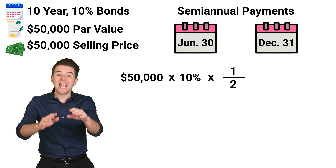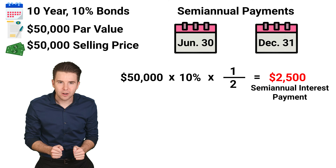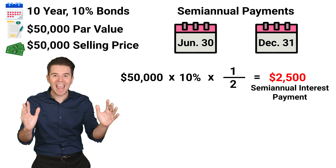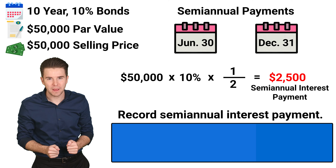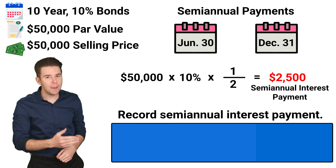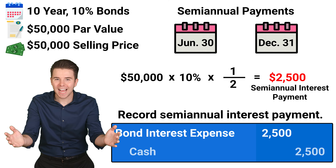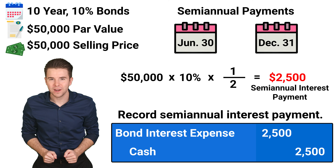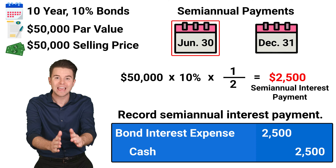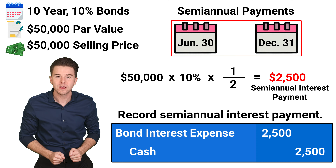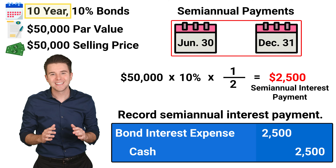This results in $2,500 interest payments twice per year for the next 10 years. To record the entry for the semi-annual interest payment, we debit bond interest expense for $2,500 and credit cash for $2,500. We record this entry for each interest payment on June 30th and December 31st for each of the next 10 years of the bond's life.